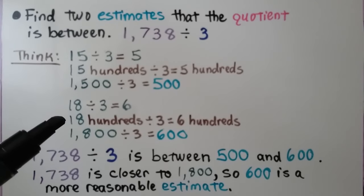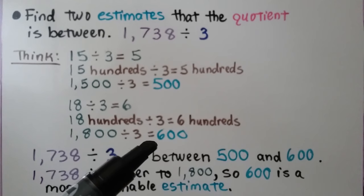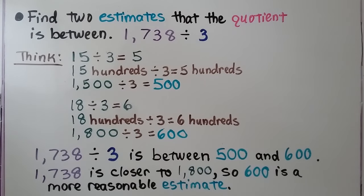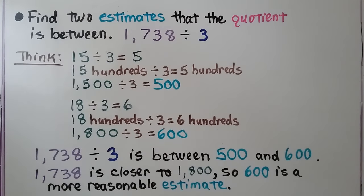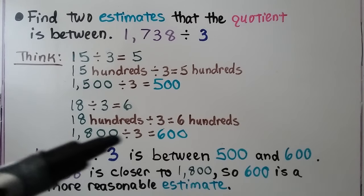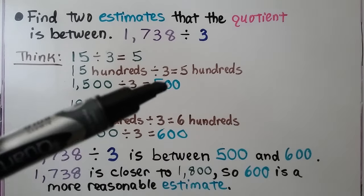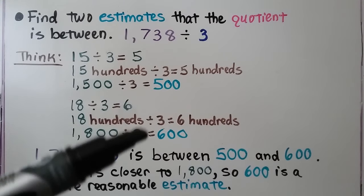For the upper estimate, we think 1,800 divided by 3 is 600, giving an estimate of 600. So 1,738 divided by 3 is between 500 and 600. Since 1,738 is closer to 1,800, 600 is a more reasonable estimate. But we did find the two estimates that the quotient is between.